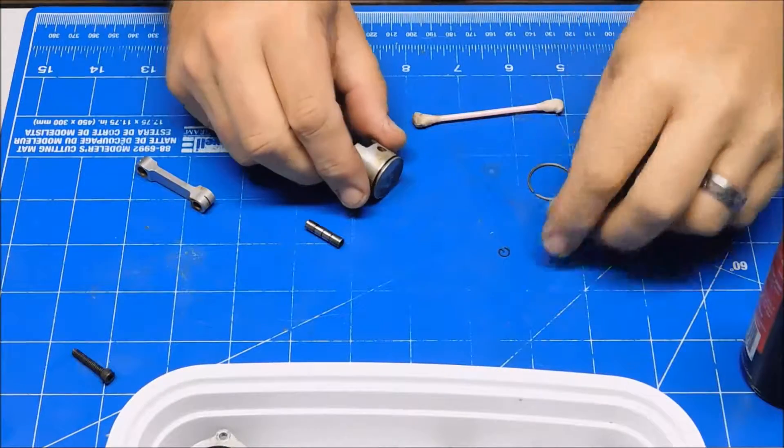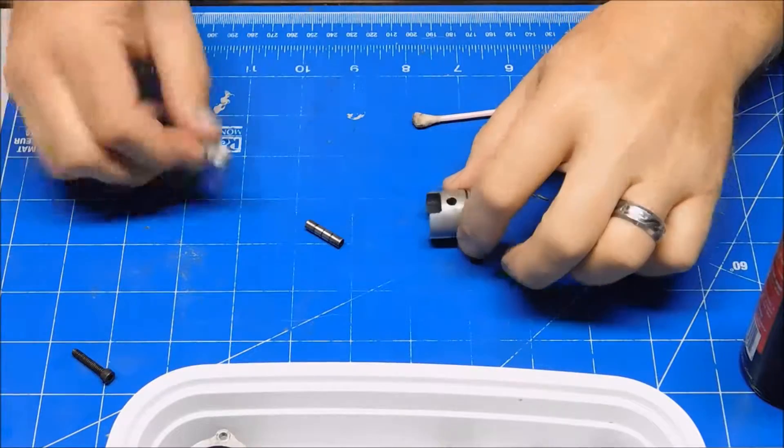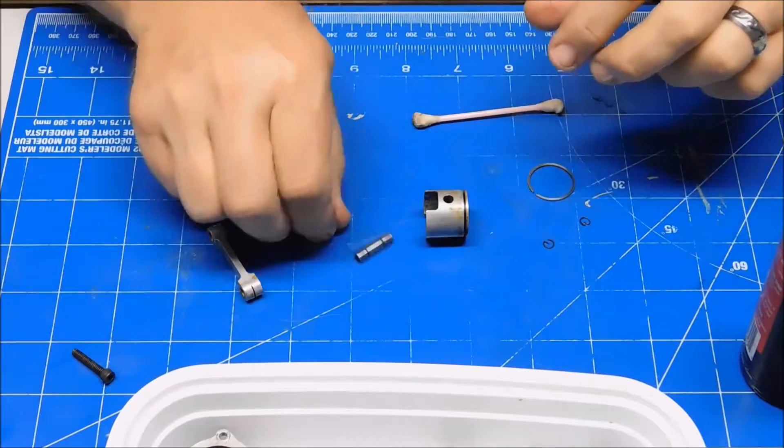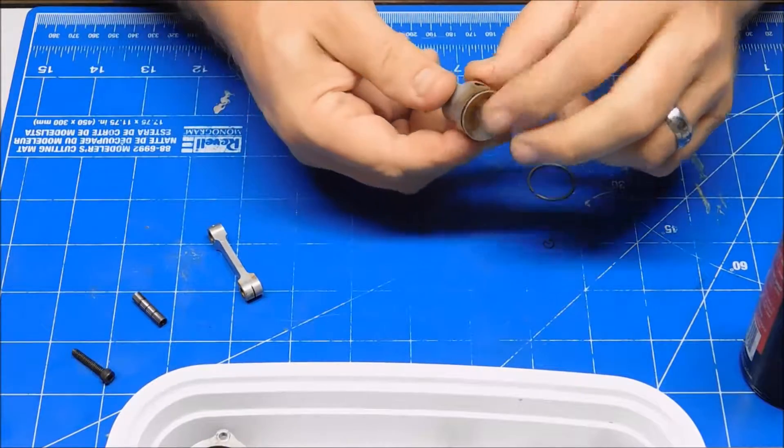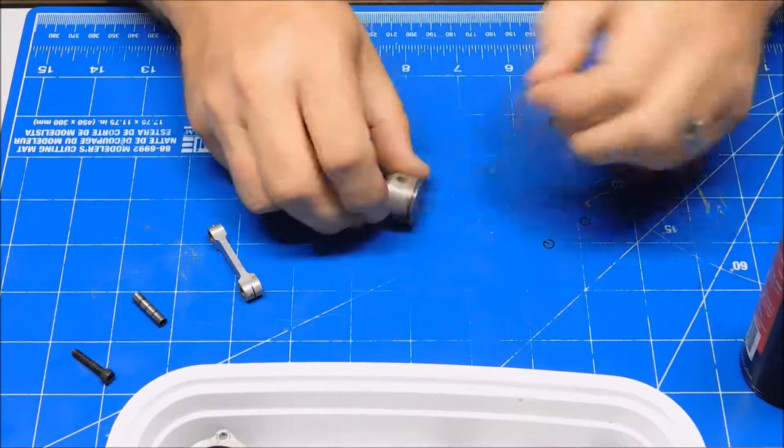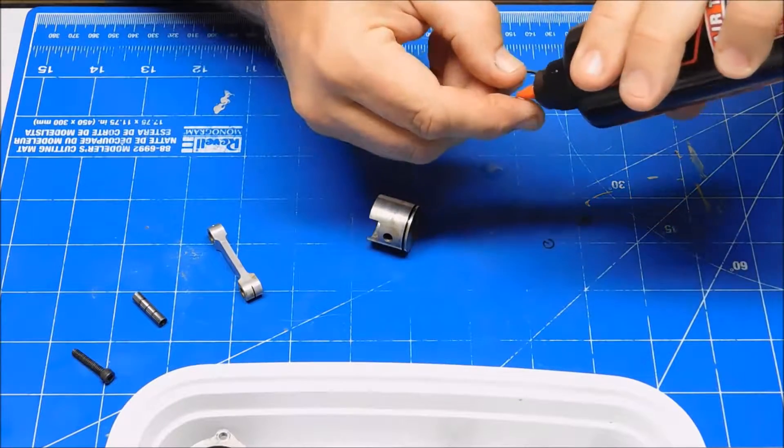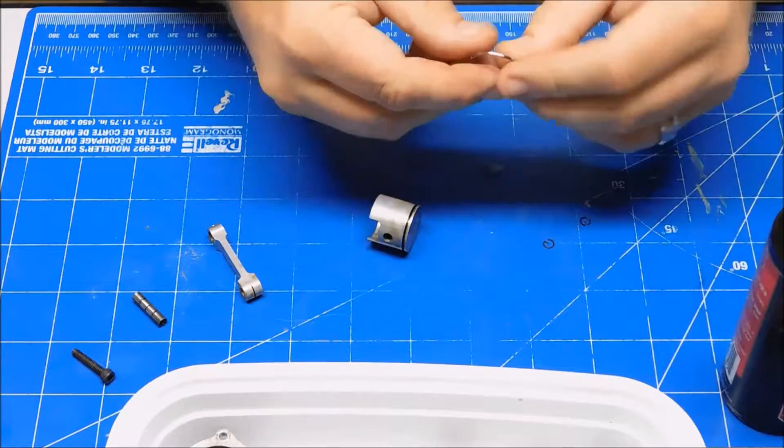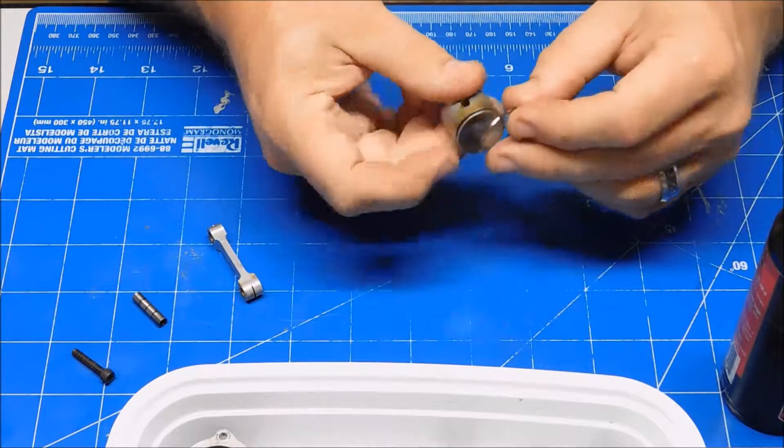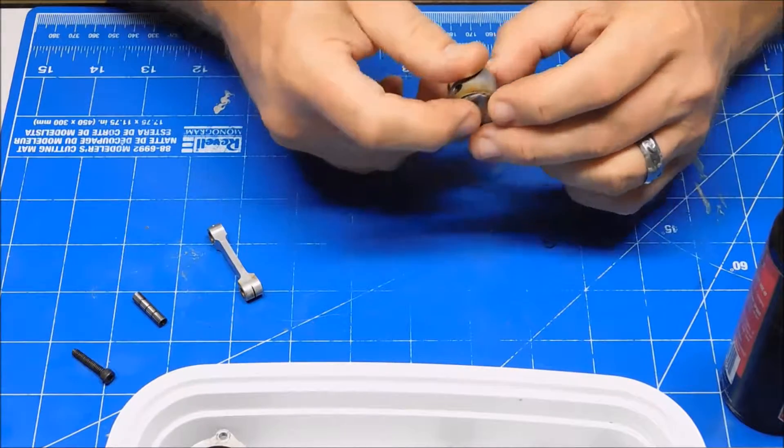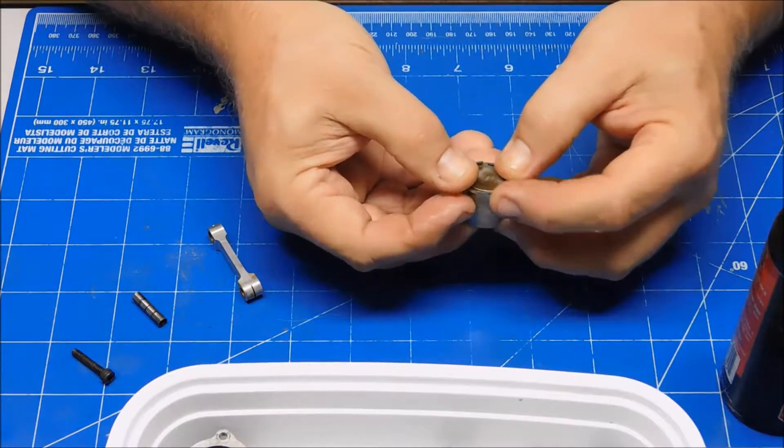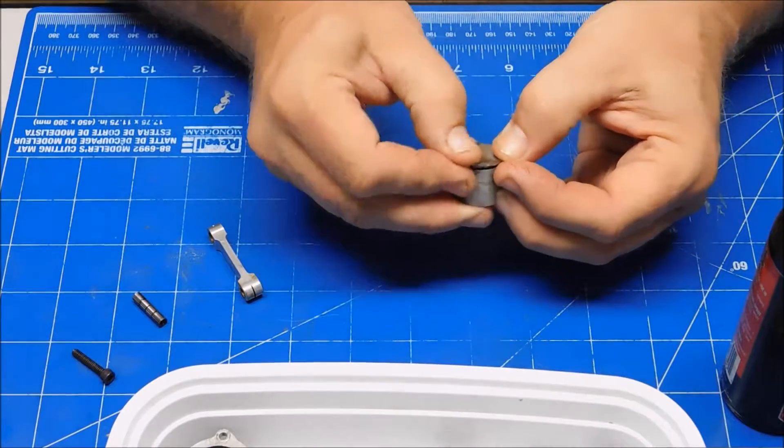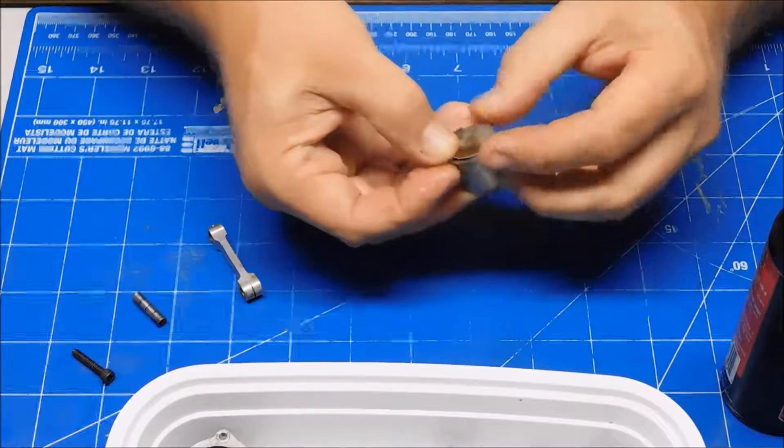So I went ahead and disassembled, took the connecting rod off and the wrist pin and all that good stuff so I could put this ring on. So I got it all lubed up here. I'm about to install this ring. So I got to find where the pin is. I'm just going to kind of very gently walk this thing down into place.